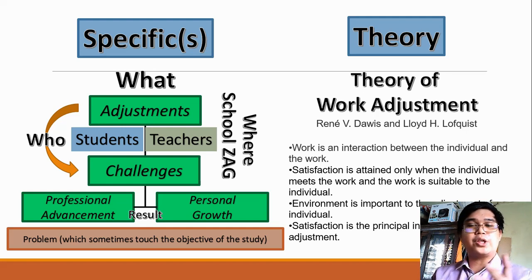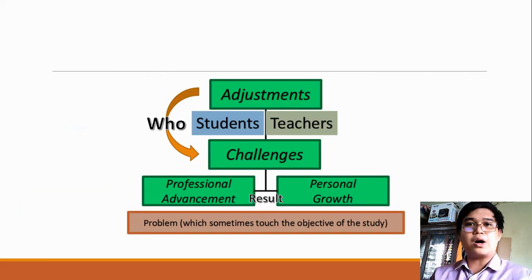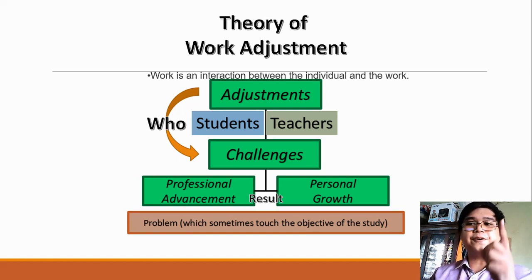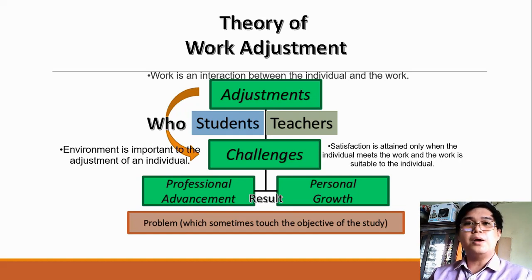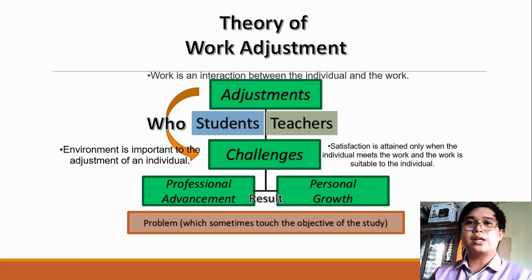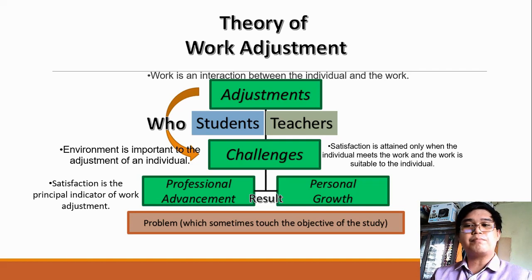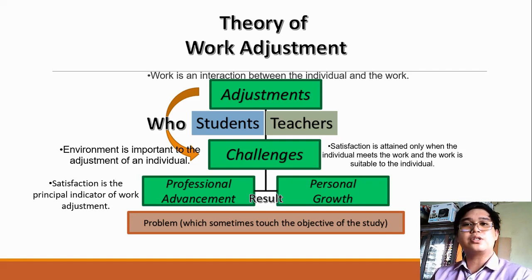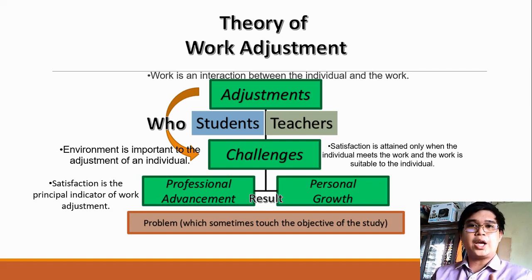How can we fit the theory to our specific case? The Theory of Work Adjustment — the first principle relates to the adjustment. The second and third principle may relate to the challenges brought by work from home for our students and teachers, by identifying the environment and how satisfaction is being affected. And lastly, professional advancement and personal growth is our indicator that our students and teachers adjusted well in this new setup.